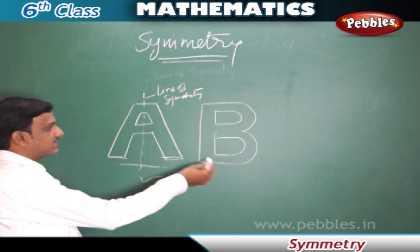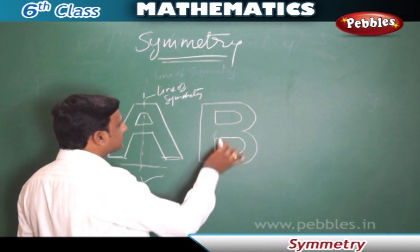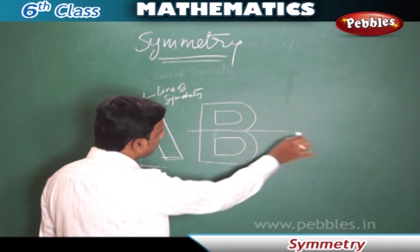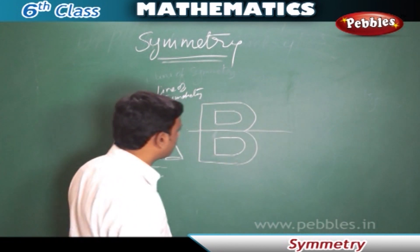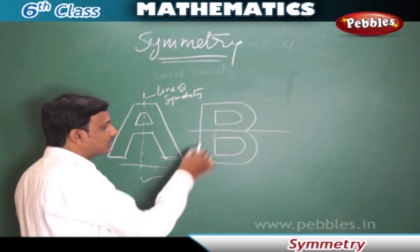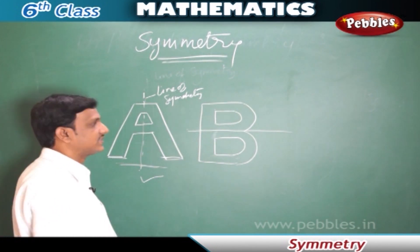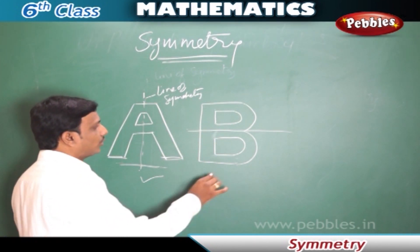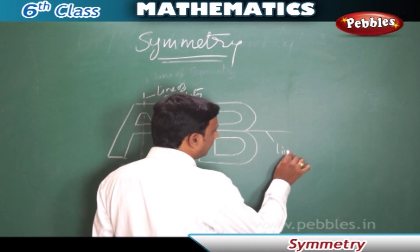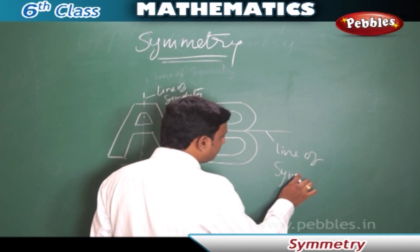And the letter B — in this case, instead of vertical, if we fold it horizontally we find two identical parts coinciding with each other. So this is the line of symmetry of letter B.